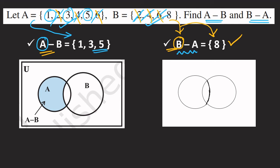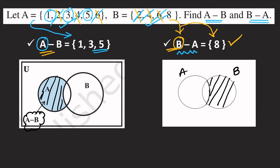In the Venn diagram, the shaded part on the left side only (excluding the overlap) represents A - B. The shaded part on the right side only (excluding the overlap) represents B - A.